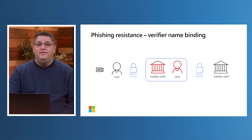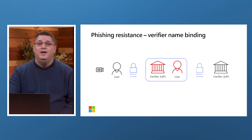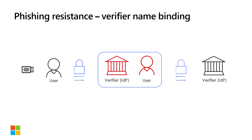An authentication protocol with verifier name binding establishes an authenticated protected channel with the verifier. It then generates an authenticator output that is cryptographically bound to a verifier identifier, which is authenticated as part of the protocol. In the case of domain name system (DNS), the verifier identifier is either the authenticated hostname of the verifier, or a parent domain that is at least one level below the public suffix associated with that hostname. The binding can be established by choosing an associated secret such as a lookup table, by deriving a secret using the verifier identifier, by cryptographically signing with the verifier identifier, or by using similar cryptographically secure means. An example of a phishing-resistant authentication protocol that uses verifier name binding is FIDO.